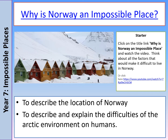What we would like you to do is think about why Norway is an impossible place. There are a couple of YouTube clips linked in the YouTube comment section for this lesson, and they're also available on Satchel1 and in the PowerPoint itself. I'd like you to click on the title link in the PowerPoint or the link in the comments section on Satchel1 or YouTube, and think about all of the different factors that might make Norway a difficult place to live — what it looks like, the climate, and everything else that might make it quite difficult for people to live there.